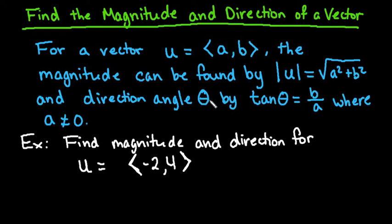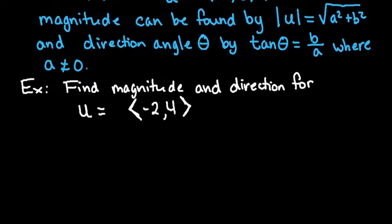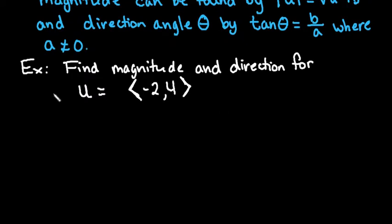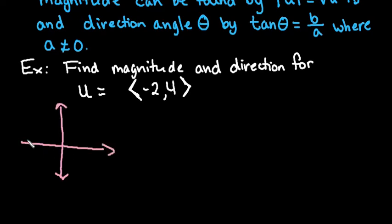So basically theta is talking about the angle of rotation in the coordinate plane. Let's do an example to find the magnitude and the direction. It does help to have a picture so that we know which quadrant we want our answer to be in. For these, I am going to find the angle in degrees rather than radians.